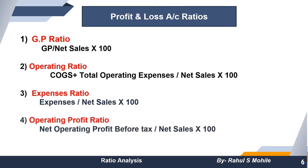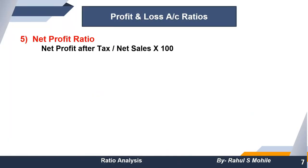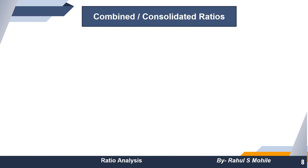Third is expense ratio: whatever expenses you have — office and administration divided by net sales into 100, selling divided by net sales into 100, financial divided by net sales into 100. Whatever expense is in the question, divide by net sales and multiply by 100. Fourth is operating profit ratio: net operating profit before tax divided by net sales into 100. Fifth is net profit ratio: net profit after tax divided by net sales multiplied by 100.